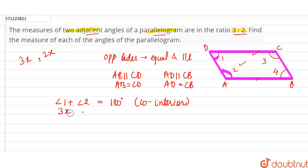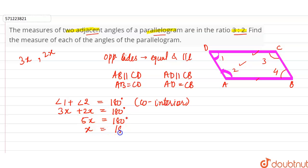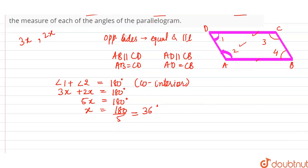So, angle 1 (3x) plus angle 2 (2x) is equal to 180 degrees. Therefore, 5x is equal to 180 degrees. So x will be equal to 180 divided by 5, which gives us x equal to 36 degrees.